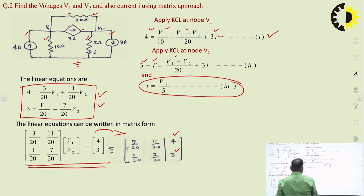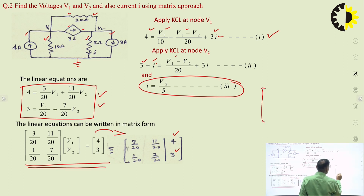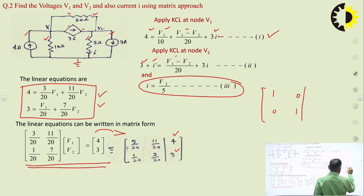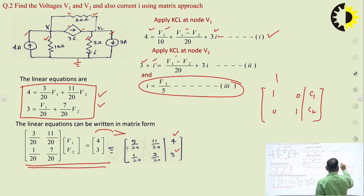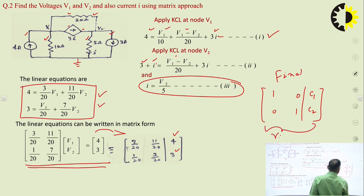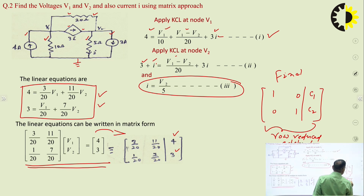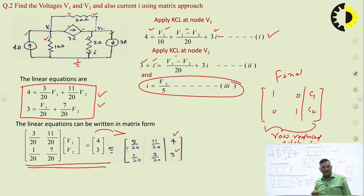This is the matrix form. Our job is to get the reduced row echelon form. Suppose it is coming C1 and C2 — we have to get this final form. Whatever values we get for C1 and C2 will give V1 and V2.